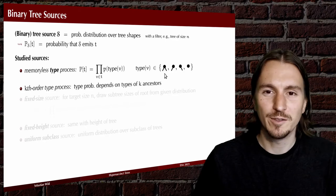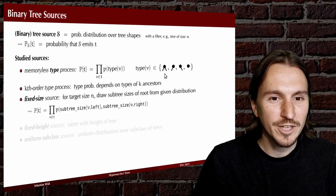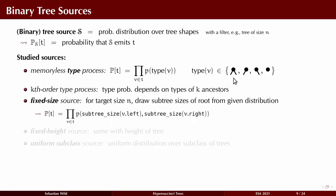A k-th order type process is the same except the types are not given with fixed probabilities; instead this probability depends on the types of the k ancestors of the node currently being generated. These two are essentially equivalent to the Markov process for text. A little more specific for trees are the fixed-size sources: we specify upfront we want exactly n nodes, then draw how many of those n nodes in the subtree of a current node are in the left subtree and how many are in the right subtree.